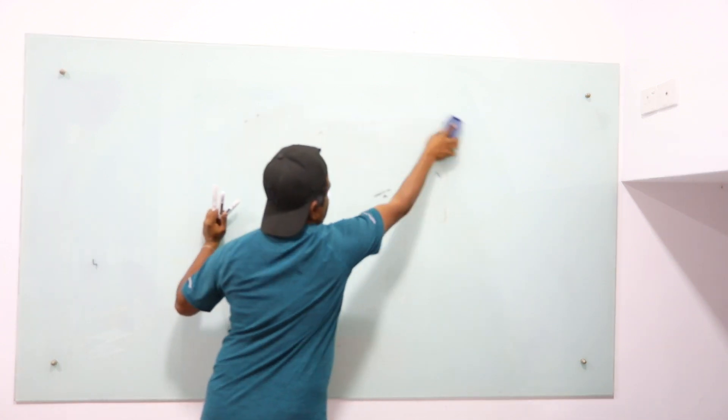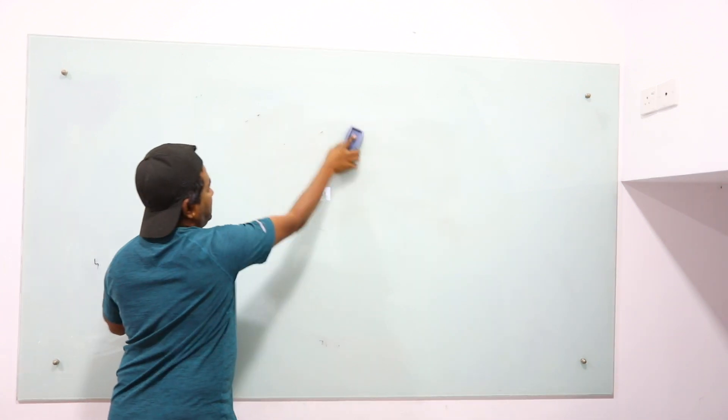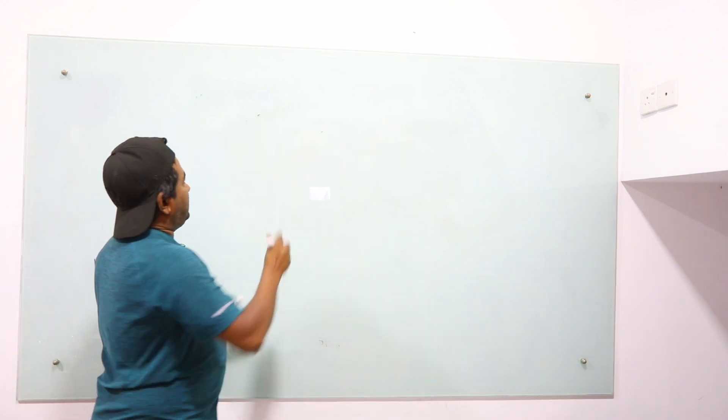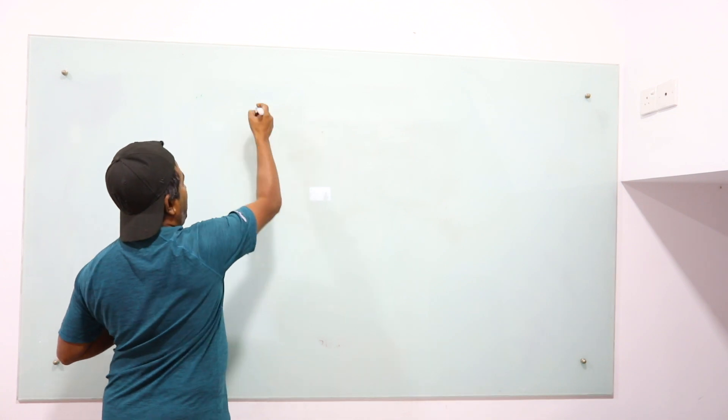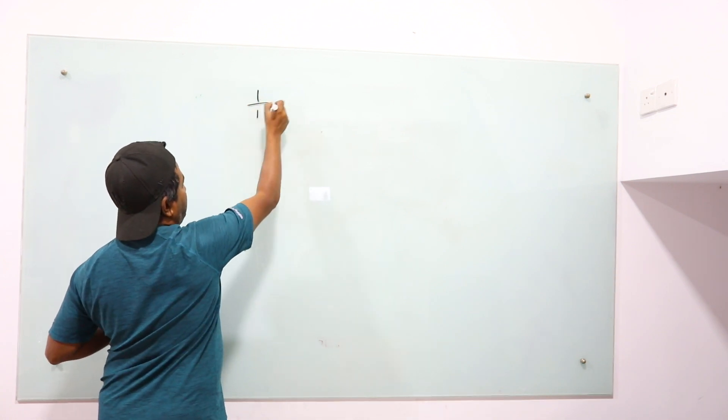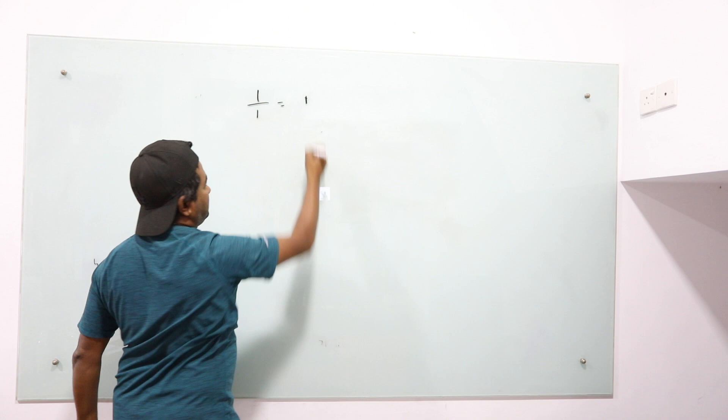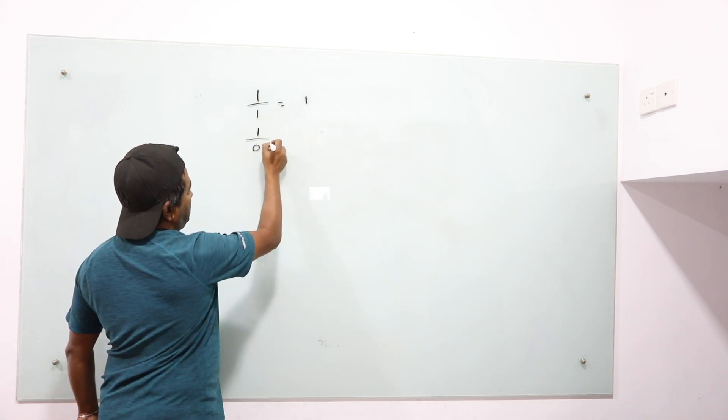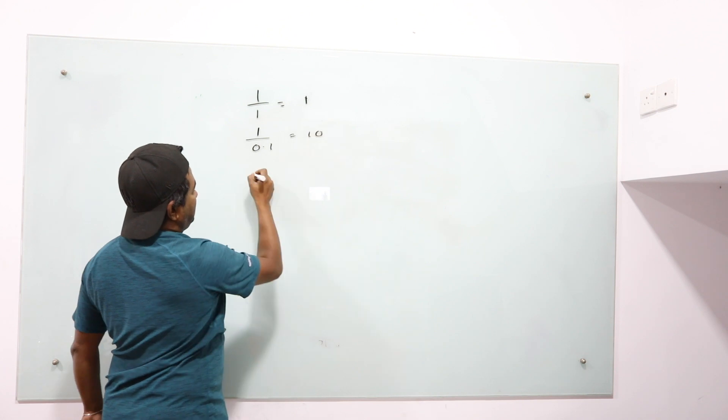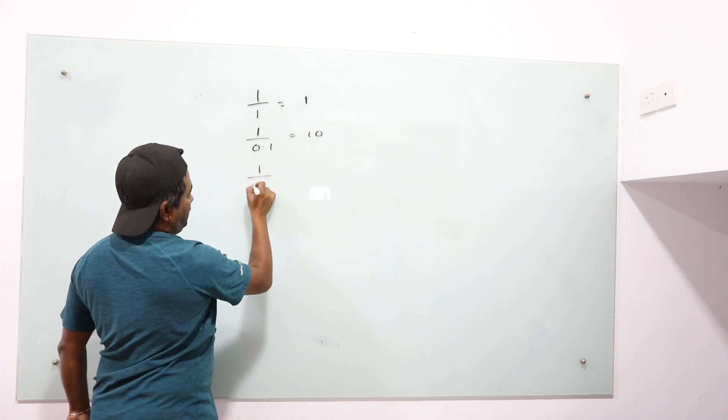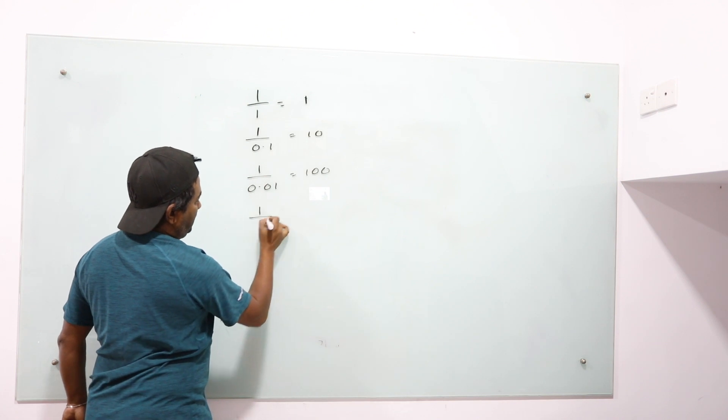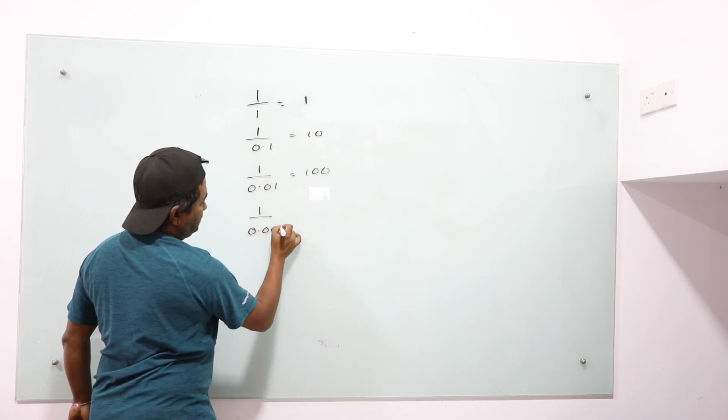Division means subtraction, right? For computers, it's subtraction. If you divide 1 by 1, you get 1. If you divide 1 by 0.1, you get 10. If you divide 1 by 0.01, you get 100.